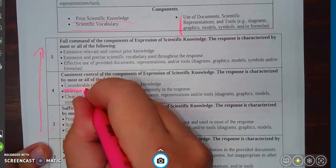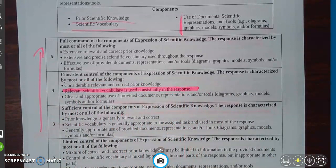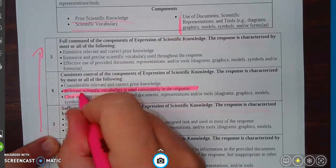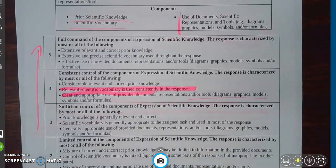This one I want to point out here. Relevant scientific vocabulary is used in the response. That's the idea that you're incorporating that scientific vocabulary when you're discussing your prompt, when you're discussing your response, and including that prior knowledge as well. Make sure also the clear and appropriate use of provided documents. And then also whatever tools are provided for you, if there's graphics, models, symbols, or formulas that you're being asked to use as well.